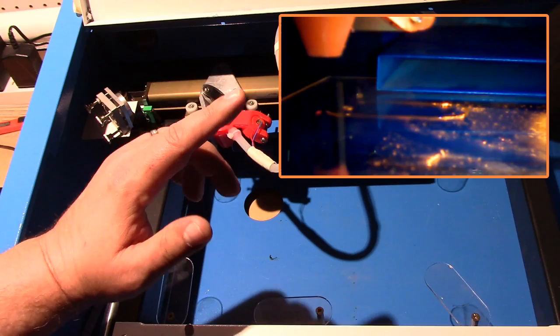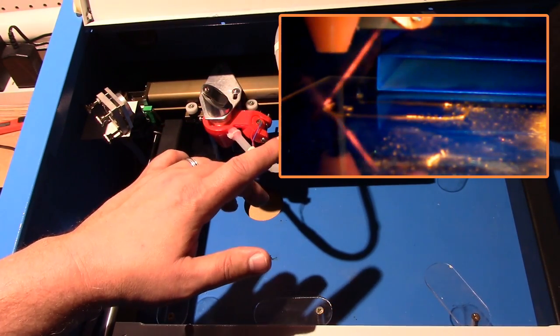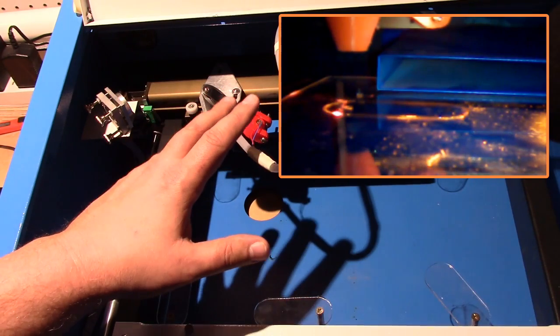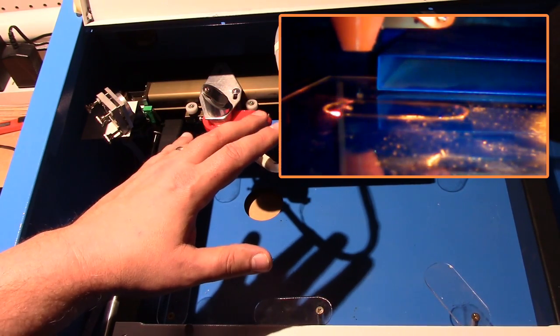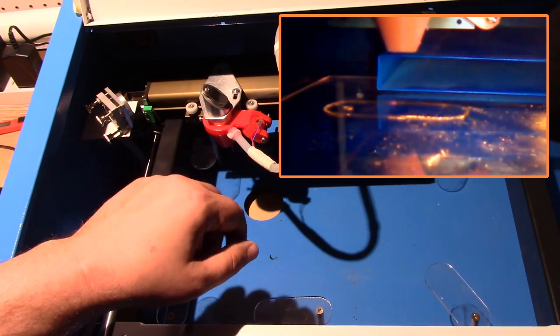So one of the things I would definitely suggest is if you're going to get one of these, get one with the analog meter. I find, well, number one, it's got the larger laser tube, and I find this a better, simpler design than the more complicated digital one I have.